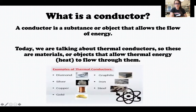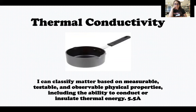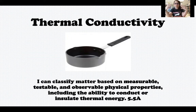Here are some examples: diamond, silver, copper, gold, graphite, iron, or steel. You'll notice lots of different types of metals are good thermal conductors. That is why most pots and pans used for cooking and baking are made out of metal, because metal is a really good thermal conductor and it allows the heat to travel easily to heat up everything in that pot or pan, instead of just what's right on top of the burner.